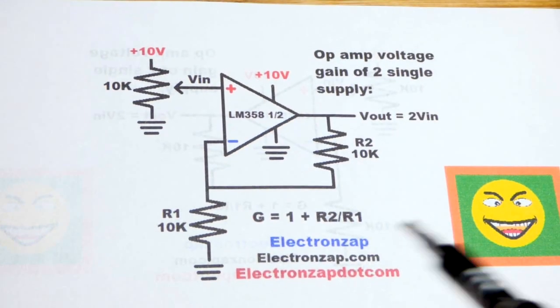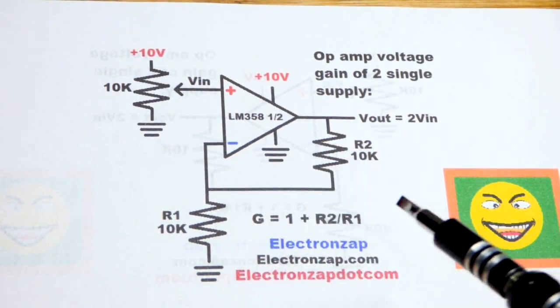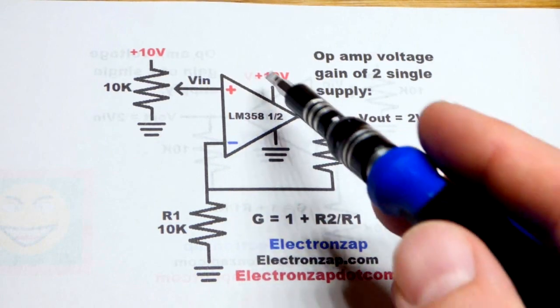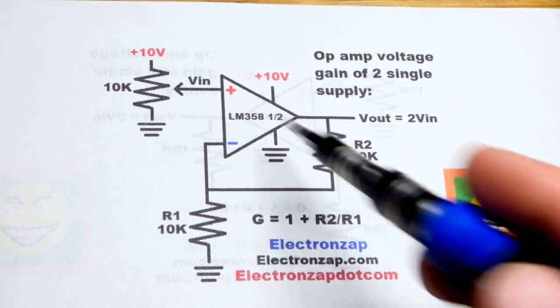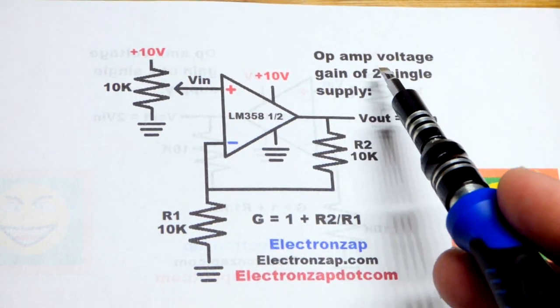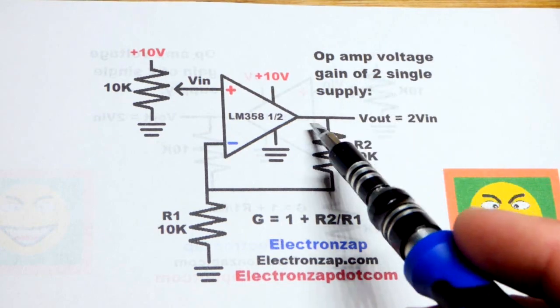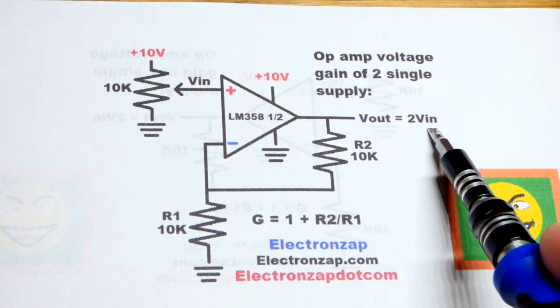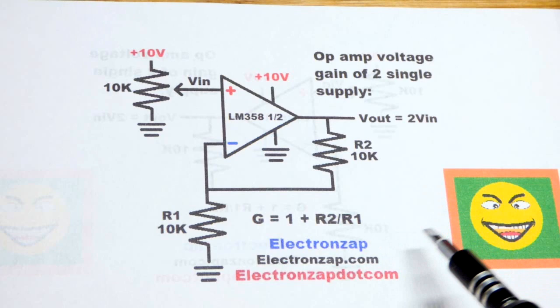So now in this video, we're going to use the LM358 op amp again. It's a single supply op amp. We're going to use a single supply, or you could use a dual supply with it. But in any case, we're going to get a voltage gain of two. So the voltage out is going to be two times the voltage in.